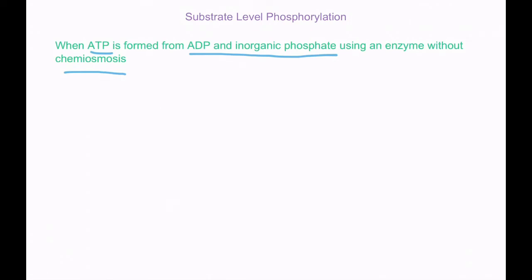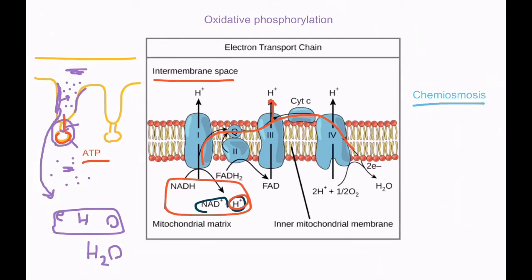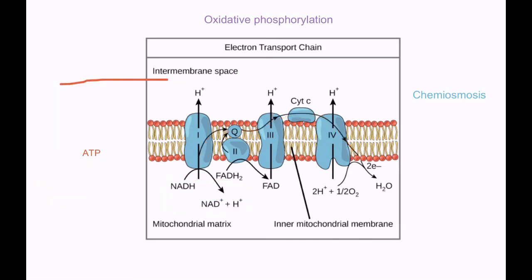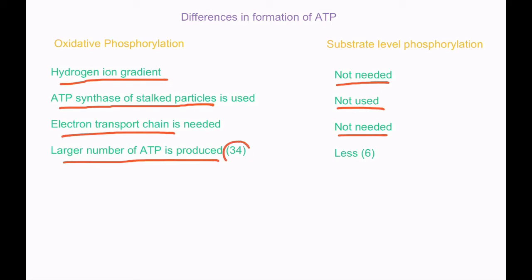In oxidative phosphorylation, a hydrogen ion gradient is required — without it, no hydrogen ions diffuse and no ATP is formed. It also requires ATP synthase of stalked particles and the electron transport chain. In substrate level phosphorylation, none of these are needed. Another key difference is output: oxidative phosphorylation produces 34 ATP, while substrate level phosphorylation produces only 6 ATP.